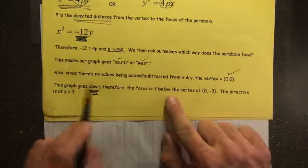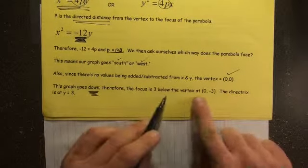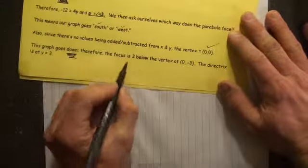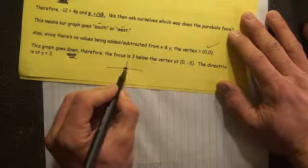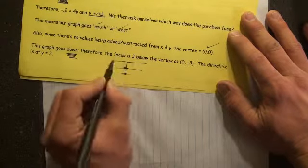Now P is negative 3. So the directrix is at Y equals 3. The focus is at 0, negative 3. So what you would have here is vertex 0, 0, focus 0, negative 3. Directrix, Y equals 3.